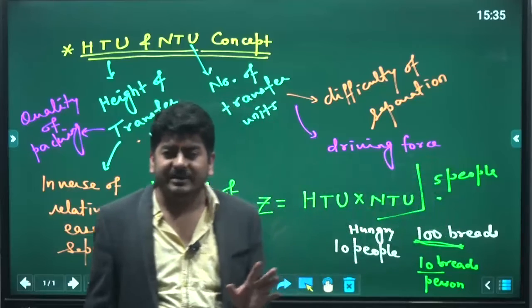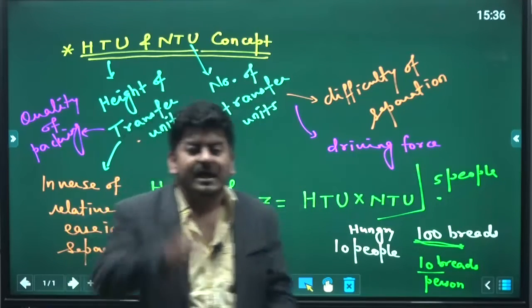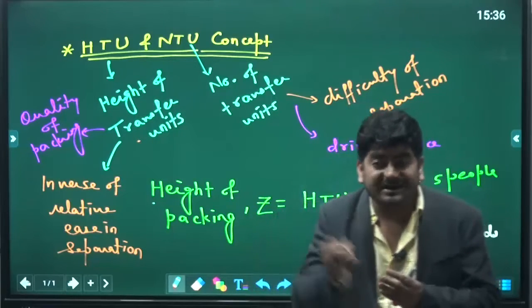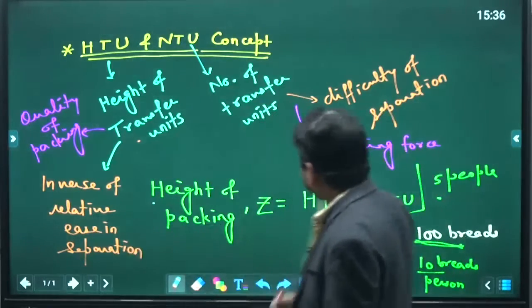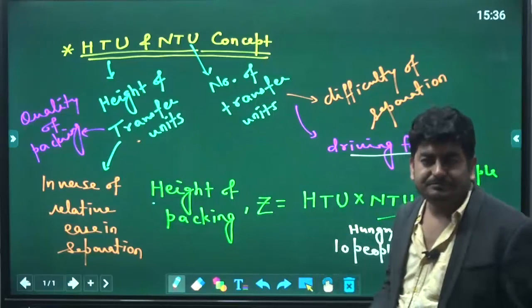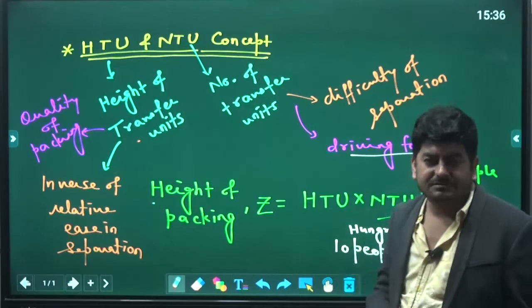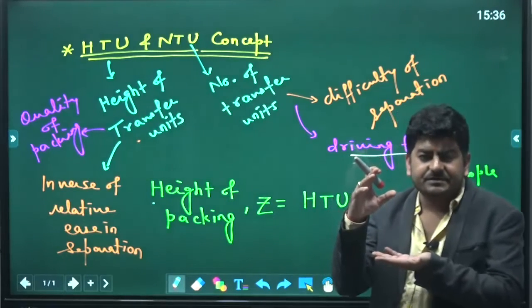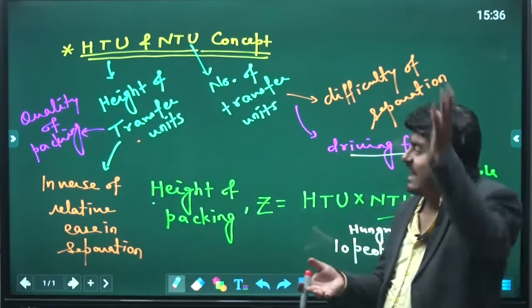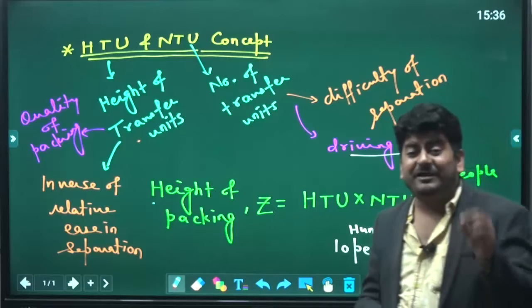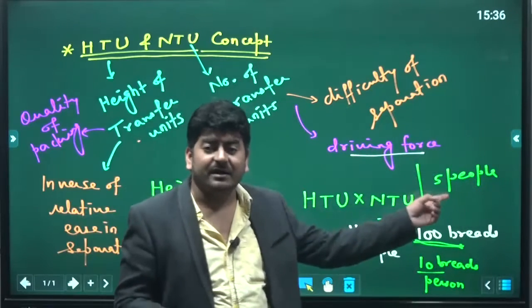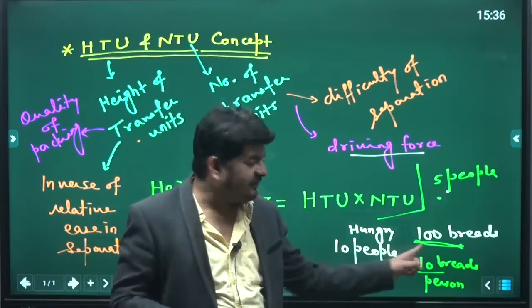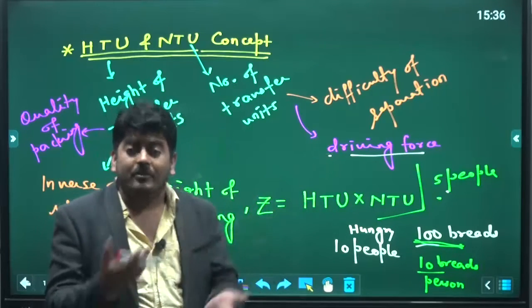So in less people your work will be done. The same way, mass transfer is all about the extent of separation. If driving force is large, then you will need less number of transfer units and your desired extent of separation will be achieved. But if driving force is small, suppose one person can eat maximum of 4 breads only, then how many people will you need? 25.